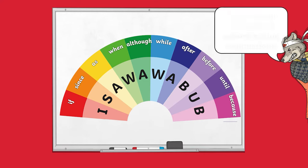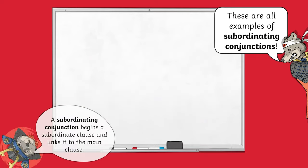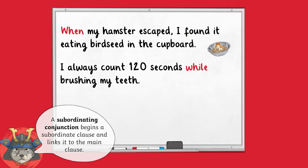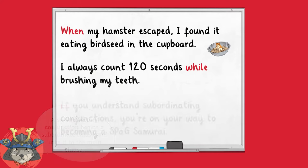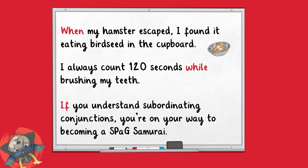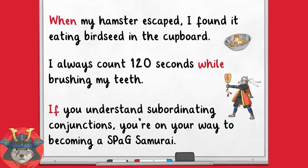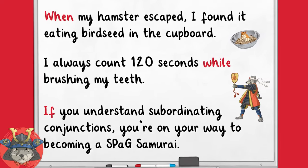Let's take a look at some of them in action. When my hamster escaped, I found it eating birdseed in the cupboard. I always count to 120 seconds while brushing my teeth. If you understand subordinating conjunctions, you're on your way to becoming a SPAG samurai. Each of these subordinating conjunctions links the subordinate clause to the main clause.